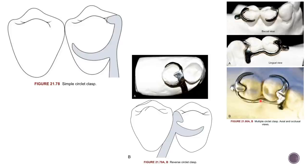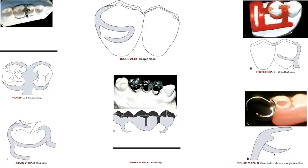Embrasure clasp: a combination of two simple circulates joined at the body — unlike multiple circulate which is joined at the reciprocal arm. It is used on the side of the arch where there is no edentulous space. It crosses the marginal ridges of two teeth to form a double occlusal rest and is used in Kennedy's Class II and Class III without modifications.